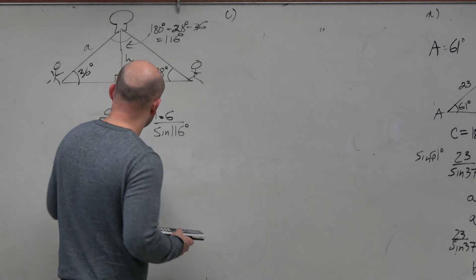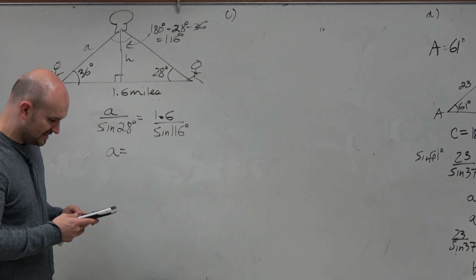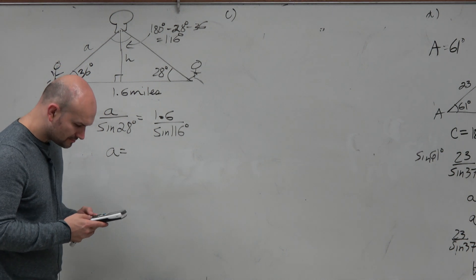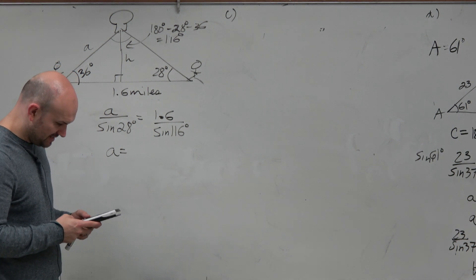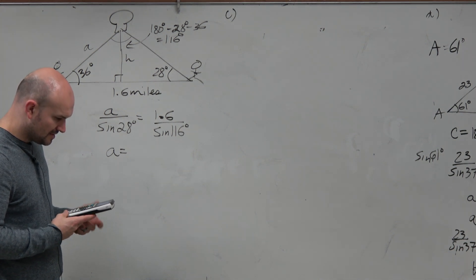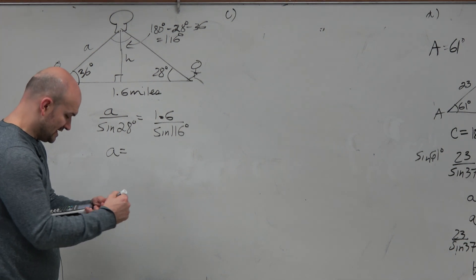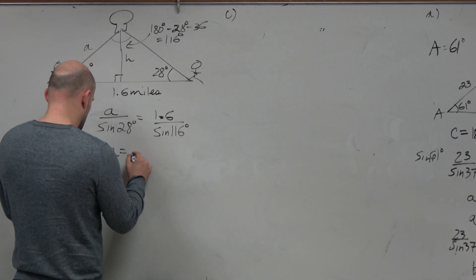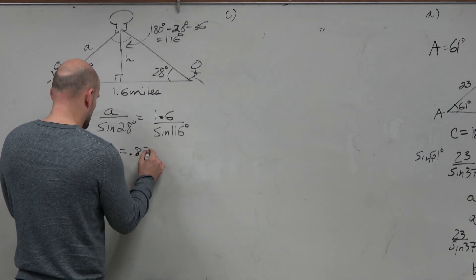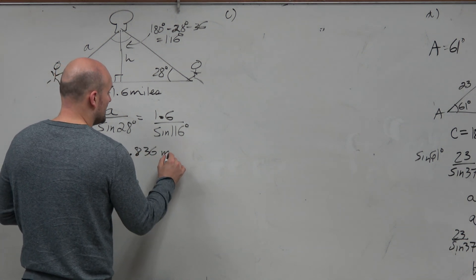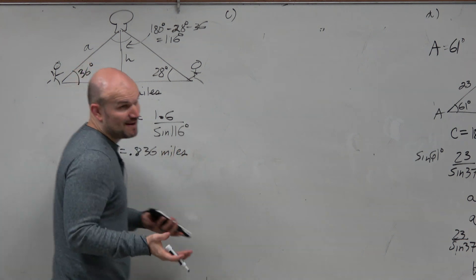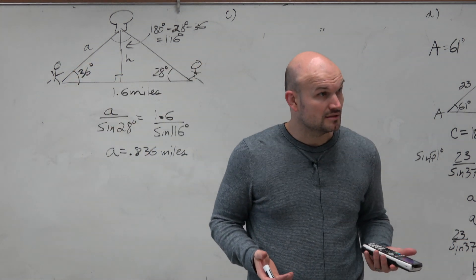Make sure you're in degree mode. So therefore, I'm going to type in 1.6 times the sine of 28 and I'm going to divide that by the sine of 116. And if you did that correctly, you should get A equals 0.836 rounded miles. But it's miles, not meters.